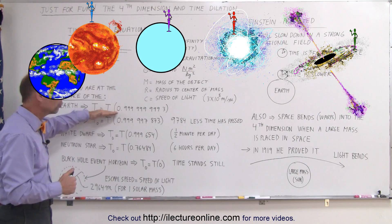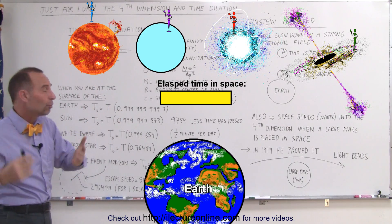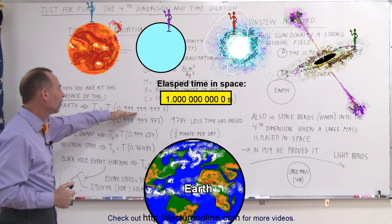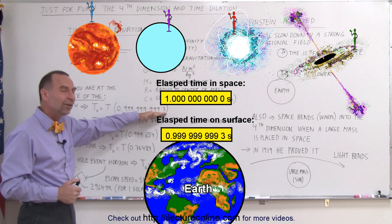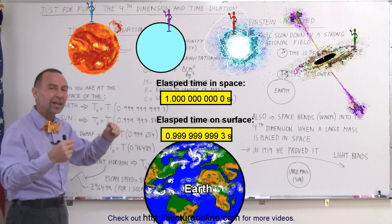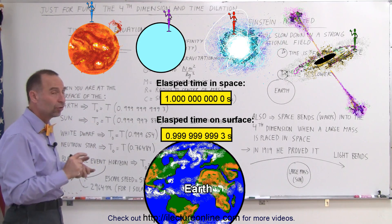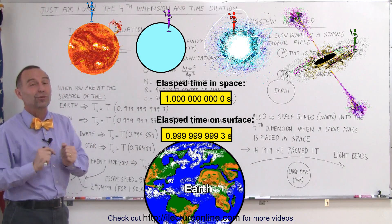First of all, when we look at the surface of the Earth relative to being out in space when there's no gravity at all, the change is very minute. It's only 7×10⁻¹¹ of a second for every second that passes. So even though time does run slower on the surface of the Earth, it's not by a lot.